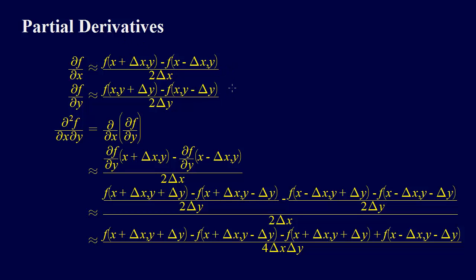I've written out here two of the partial derivative formulas. We have the partial derivative of f with respect to x. And if this had a limit as delta x goes to 0, it wouldn't even be an approximation. But the approximate form would be f of x plus delta x, y minus f of x minus delta x, y, over 2 delta x. So this is a centered difference approximation, and we just have a comma y here — everything else is the same as we've seen before.